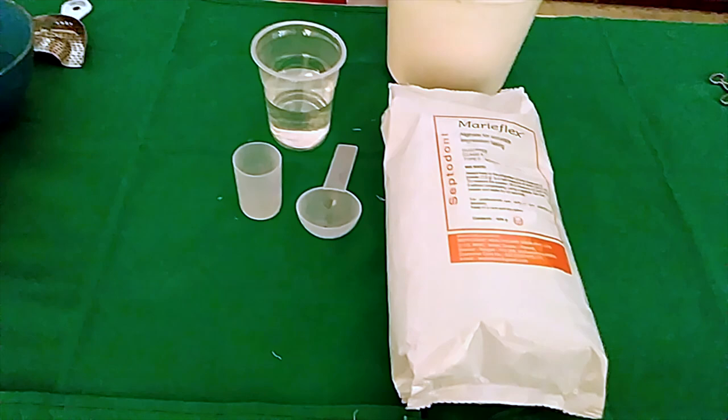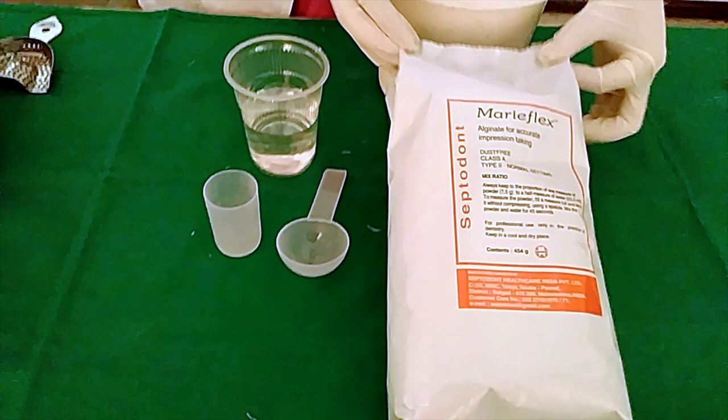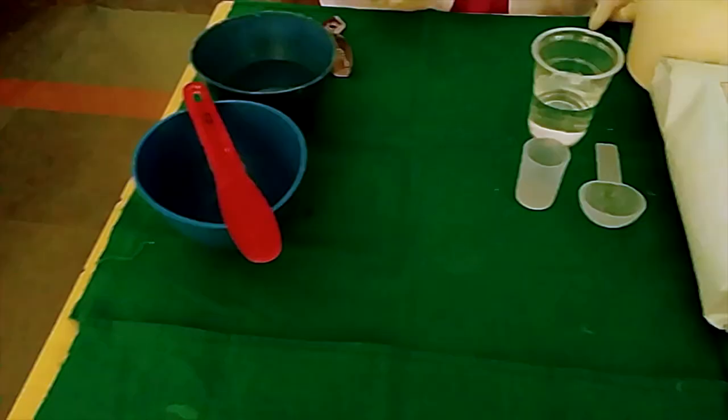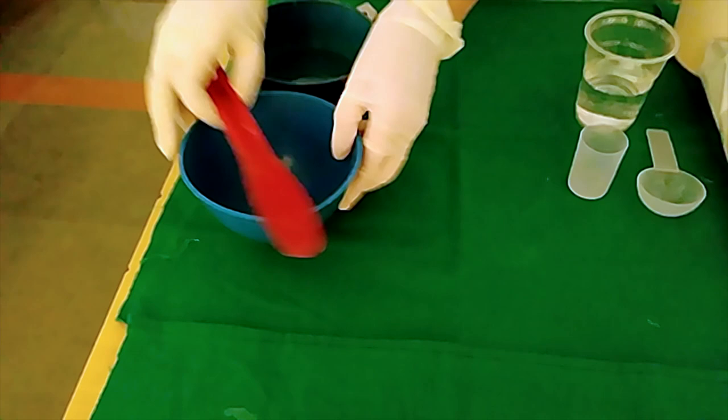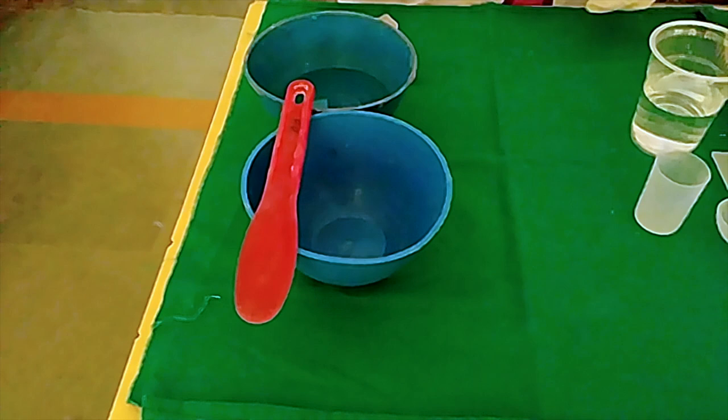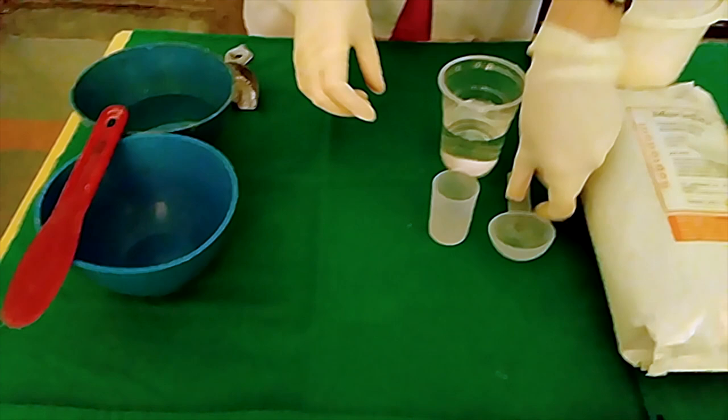The powder is usually supplied in sachets or in plastic tumblers. The instruments used for mixing are a rubber bowl and curved plaster spatula, or you can use a plastic spatula. For measuring the powder, a plastic scoop is provided by the manufacturer, and for measuring water, a measuring cylinder is provided.